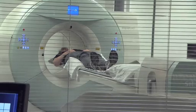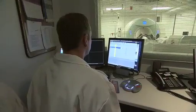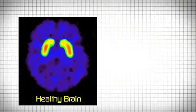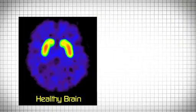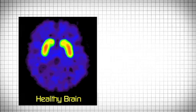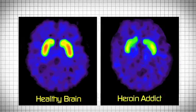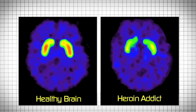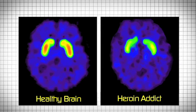Advancements in scanning technology now allow researchers to actually visualize these chemical changes inside the brain. This is a healthy brain. The red color indicates normal brain chemistry in the reward pathway. And here's the brain of a heroin addict. The absence of red indicates, in a sense, the blown fuses due to drug abuse.